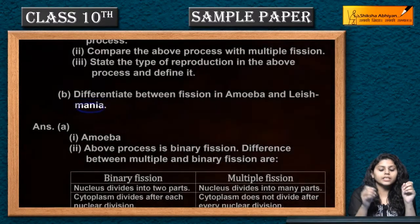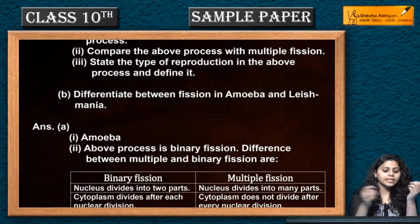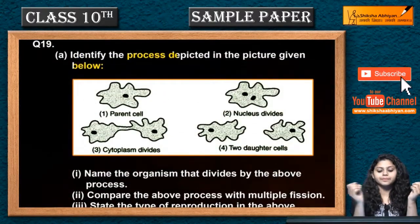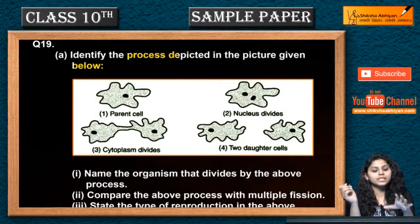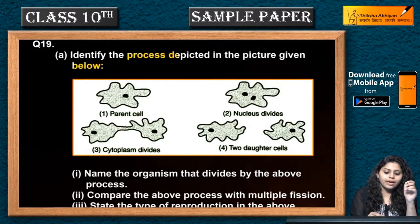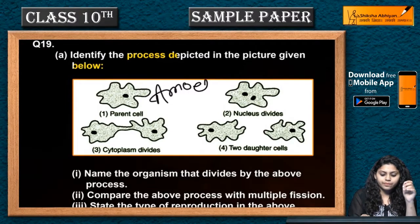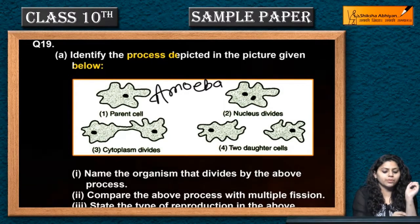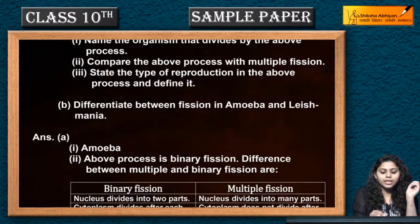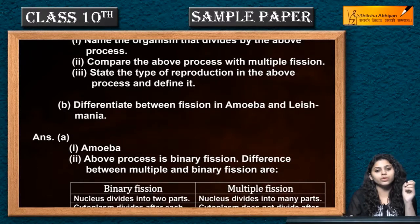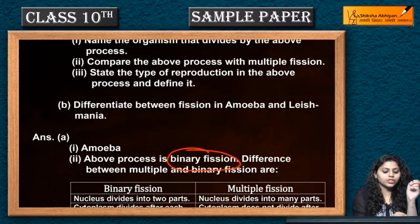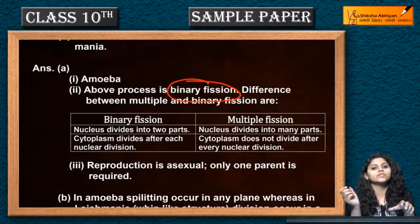The differences between amoeba and leishmania are shown. This process is happening in the amoeba — it is asexual reproduction. This is binary fission; asexual reproduction is happening in the amoeba.